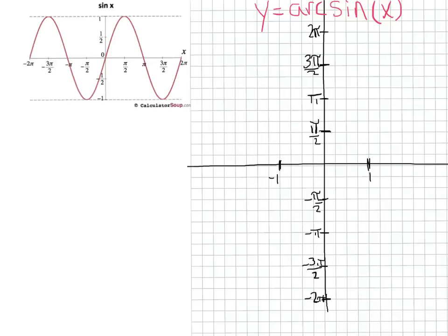We're going to start with arc sine, or y equals sine inverse of x. The whole essence of all inverses is that the x and y values switch places. Notice how I've changed the labeling of my axes — instead of labeling the x-axis in terms of pi, we've now labeled the y-axis in terms of pi. The x-axis is labeled in whole numbers; I've labeled negative 1 and 1. I've imported a picture of our regular sine curve, and there are 9 really special points I'm going to find the inverse of and transpose to this graph.